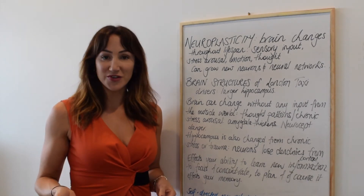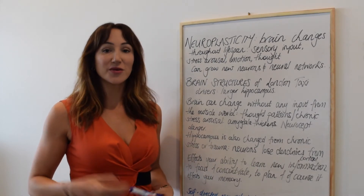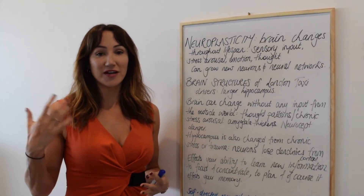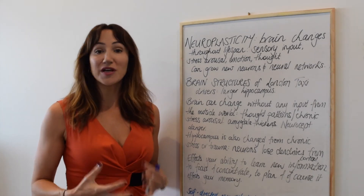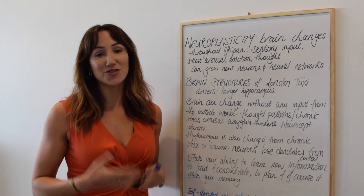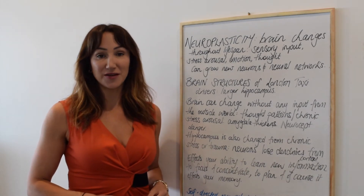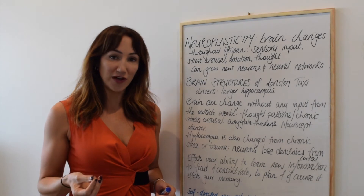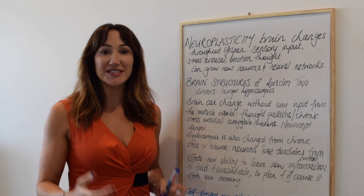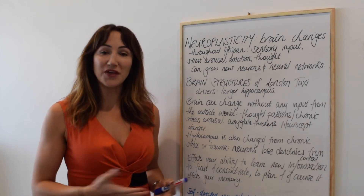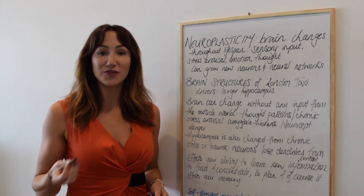The brain can also change without any influence from the outside world — it can change in regards to thought patterns and stress arousal. Chronic worrying has been linked to an increase in size of an area called the amygdala, which is part of the survival brain. It detects whether we are safe or whether a situation is dangerous or life-threatening, and this is called neuroception — it happens below the level of conscious awareness.